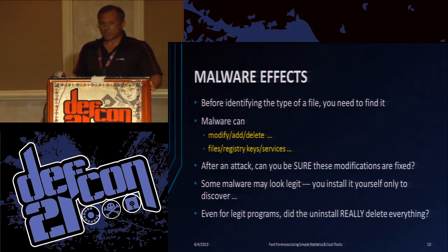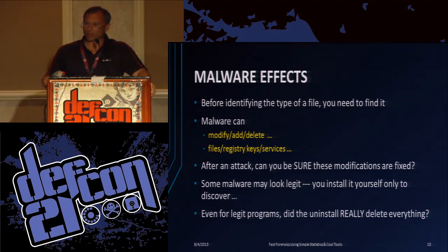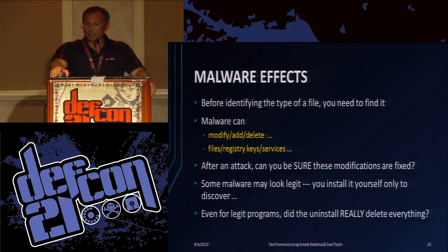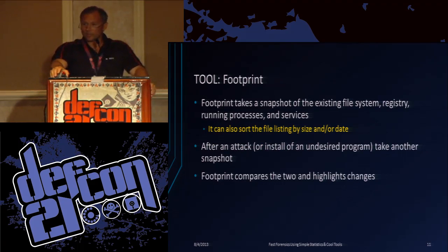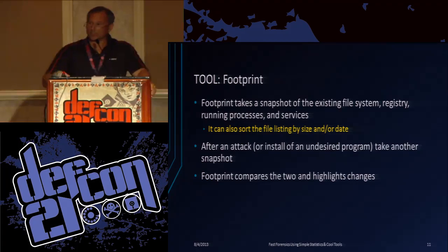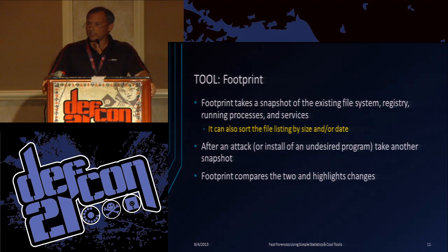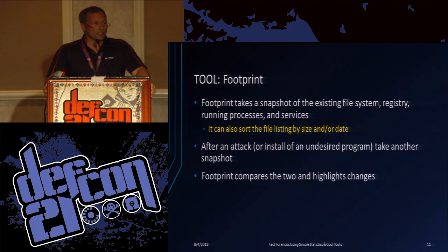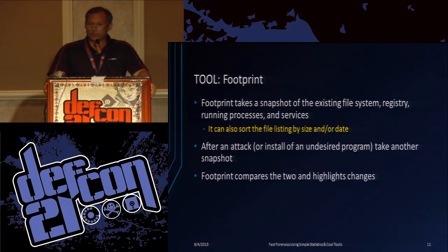Malware effects, as I mentioned, does lots of different things to your system. Sometimes you install trial programs or programs you don't want anymore and uninstall them. Did the uninstall get rid of all the registry keys? Did it get rid of all the files? Footprint can help you find out. It takes a snapshot of the system and stores it in a big log file. It can save by file size. That's good for finding files that were just recently installed — often malware will drop files in different places but they all have the same date. You can also use it to find videos or pictures saved to your browser content folder that regular Windows browsing doesn't search.